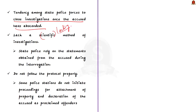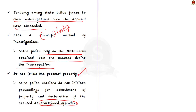According to the author, there is a tendency among state police forces to close investigations when the accused have absconded, and they also lack a scientific method of investigation. For example, state police forces heavily rely on statements obtained from the accused during interrogation, which is not always scientific. Some police stations do not follow protocol properly — for example, some initiate proceedings for attachment of property and declaration of the accused as a proclaimed offender. A proclaimed offender can be arrested by any citizen of India at any time or any place, which can be perilous for law enforcement. In short, state police forces lack the time and expertise to deal with fugitives.